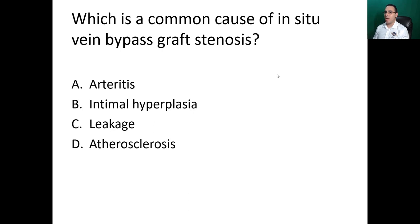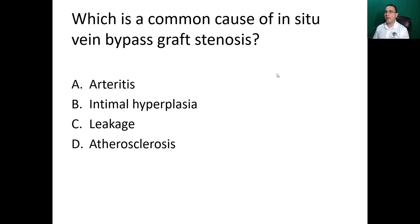Which is the common cause of an in-situ vein bypass graft stenosis? Options: A — arthritis, B — intimal hyperplasia, C — leakage, D — atherosclerosis. The clue is: universal response of vessels to damage. The answer is intimal hyperplasia.